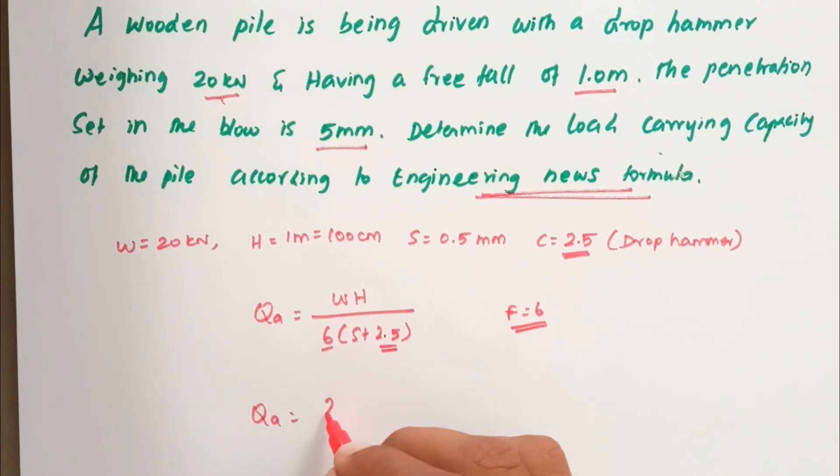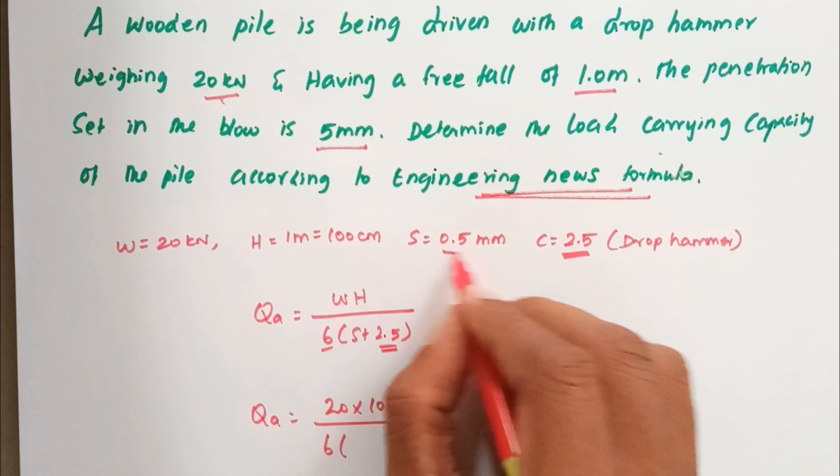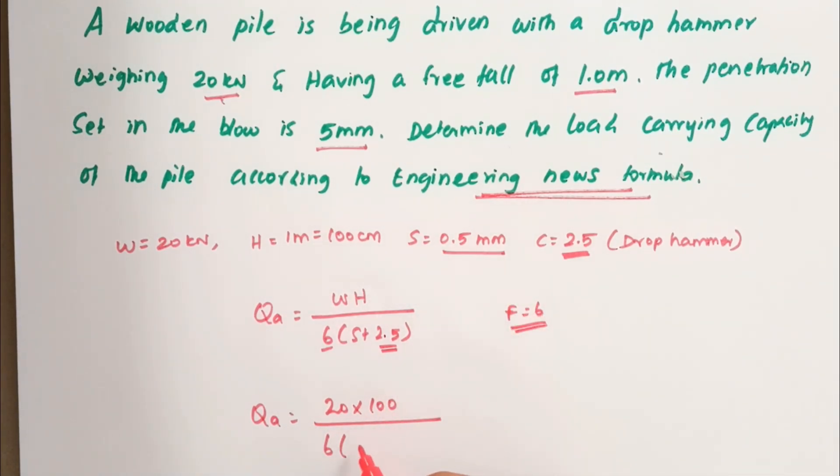Qa equals 20 times 100 centimeters divided by 6 times (S is 0.5mm, so we have to take in centimeters, 0.05 cm, plus 2.5).